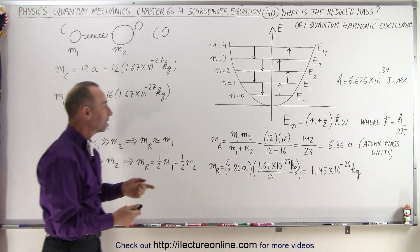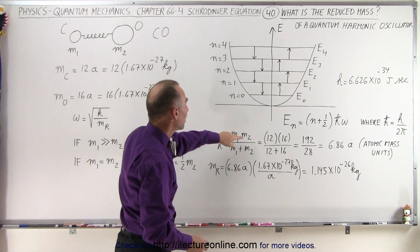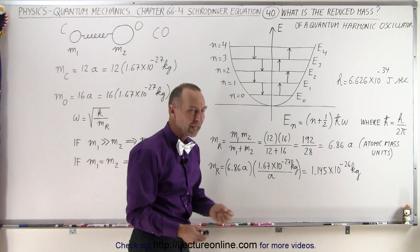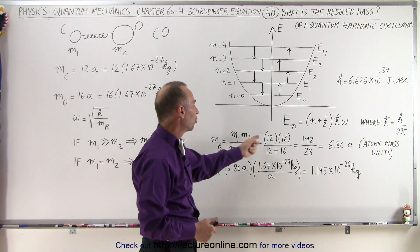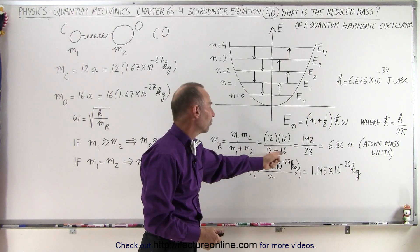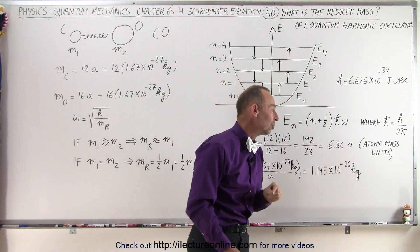So if we're going to calculate the reduced mass of this molecule right here, carbon monoxide, we take the product of the two masses divided by the sum. Let's keep it simple and do it in terms of atomic mass units. So 12 times 16 divided by 12 plus 16, that ends up being 6.86 atomic mass units.